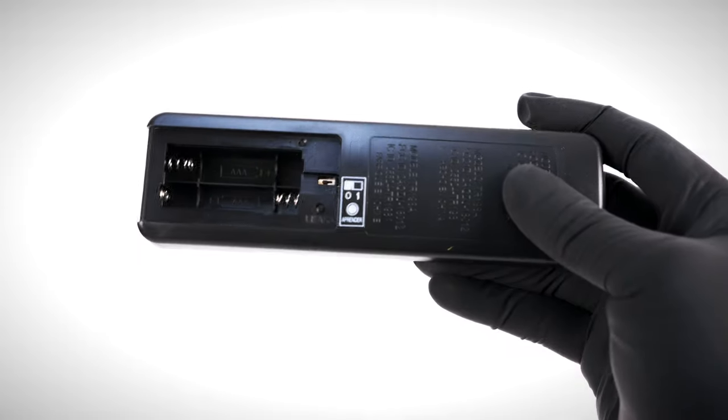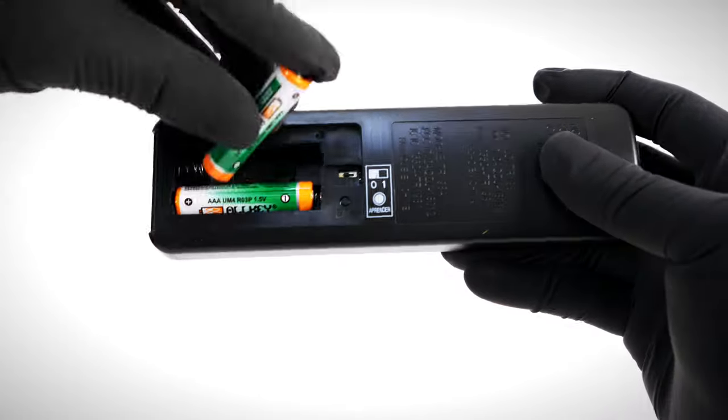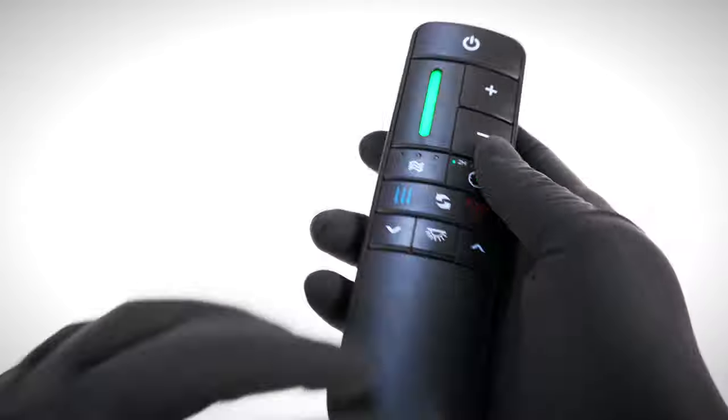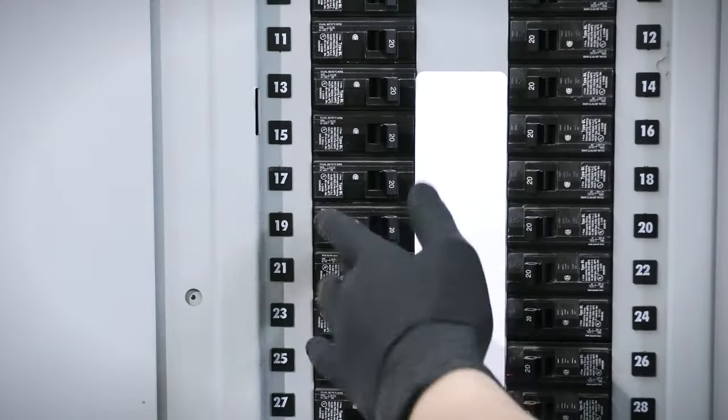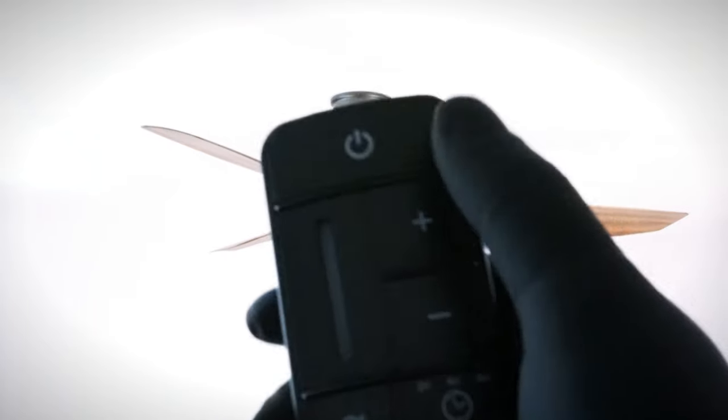Begin by installing the two included batteries. By default, the dip switch will be set to zero for universal operation. Simply restore power to the fan and press the on-off button to start it up.